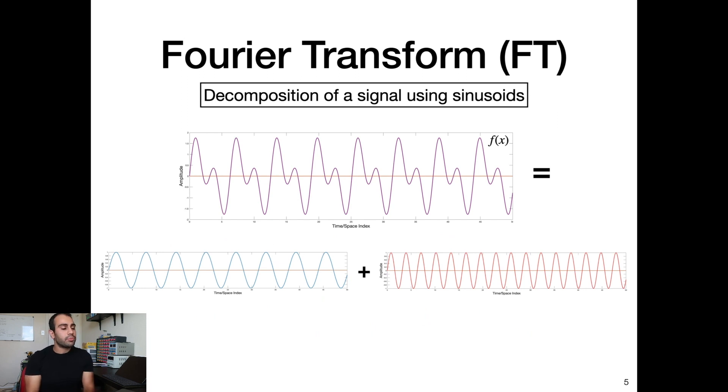So now getting to the bread and butter, the main topic, the main event of the video, the Fourier transform. So a Fourier transform intuitively is a decomposition of a signal into sines and cosines. So here we have this purple signal f of x plotted over time. If we do the Fourier transform, it turns out we can decompose this into two simple sine waves of different frequencies. And the way we do this is via the Fourier transform, which is given by this expression. So we have f of k equals the infinite integral of f of x, which is our signal, our time series, our function, whatever you want to plug in there, times e to the minus two pi i kx dx.